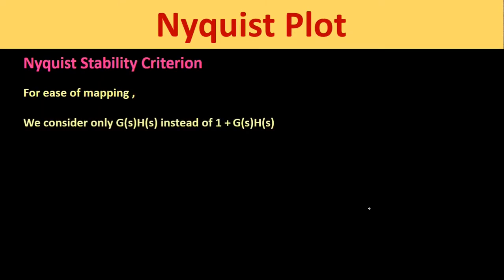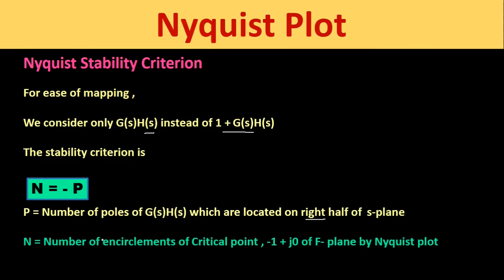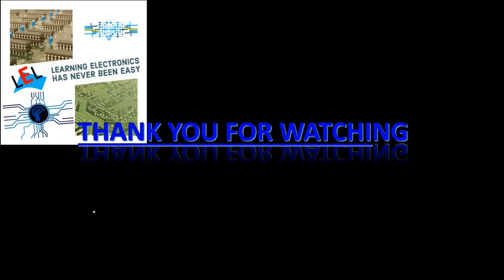For ease of mapping, we consider G(s)H(s) instead of 1 + G(s)H(s). In this case the stability criterion remains the same — N = -P — but now P equals the number of poles of G(s)H(s) located in the right half of the s-plane, and N equals the number of encirclements of the critical point -1 + j0 of the F-plane by the Nyquist plot. So instead of tracking encirclements of the origin, we track encirclements of the critical point -1 + j0. Thank you very much for watching, and please subscribe to my channel for more updates.